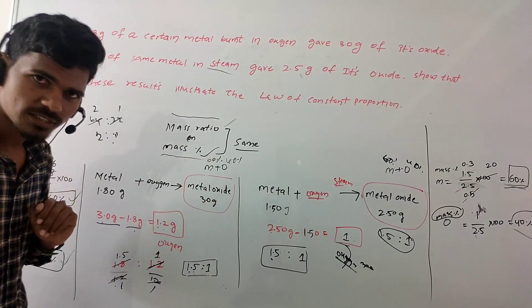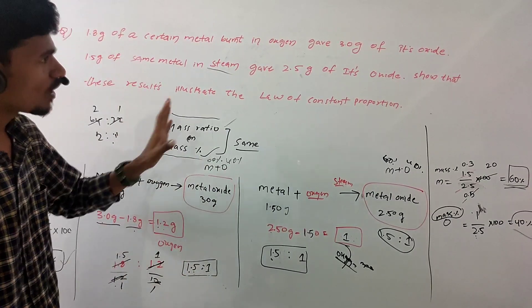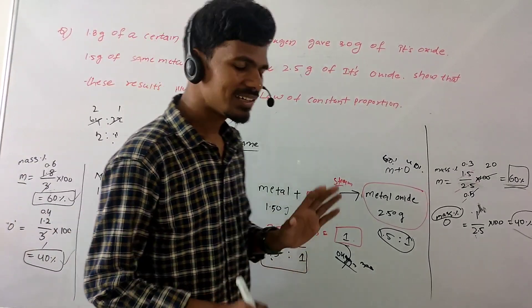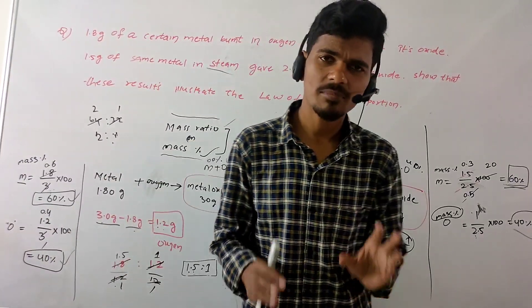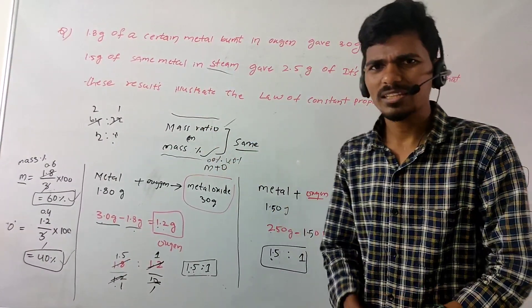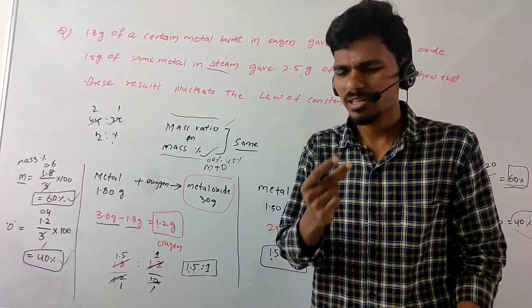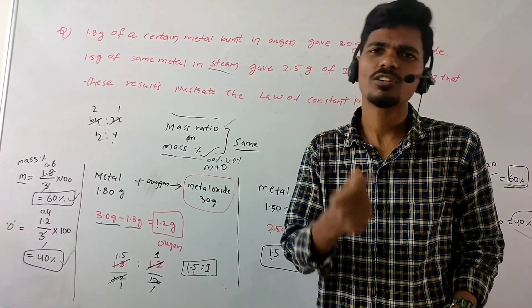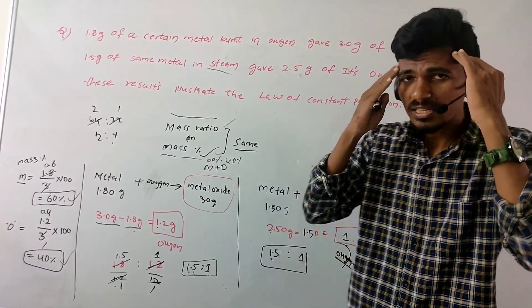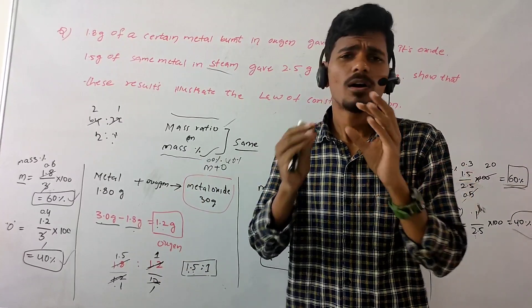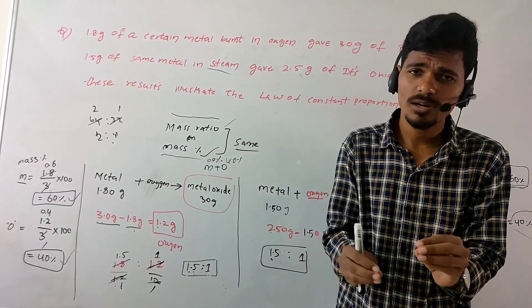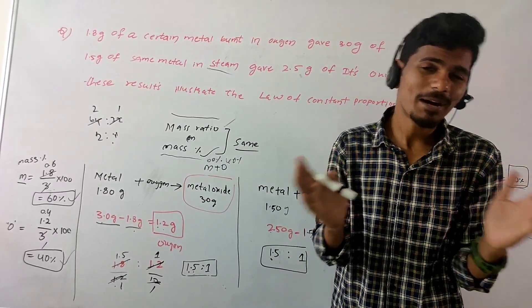Percentage is 40%, so we have proved this is the law of constant proportion. This will be done in the next lesson as well. All the very best to all of you — thank you so much, and bye bye.